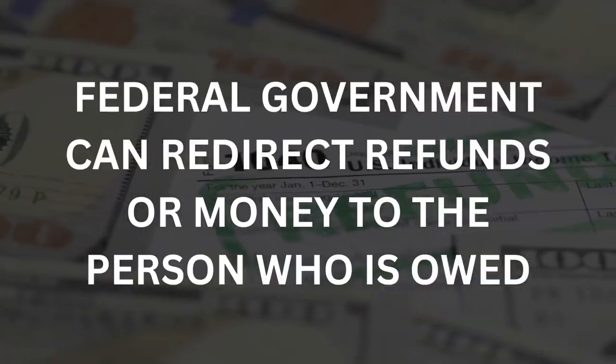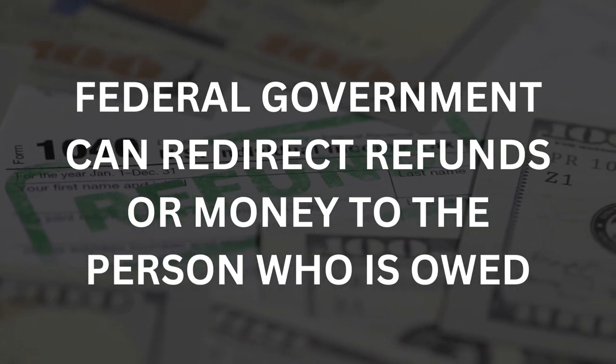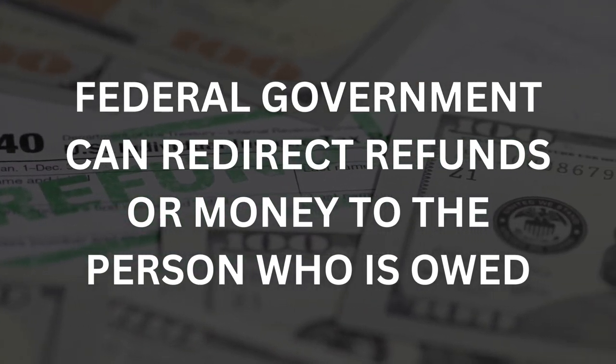Child support and alimony payments are often deducted automatically through an income withholding order via the state disbursement unit. If the person paying child support is found to have not complied or owes significant arrearages, federal tax refunds or other federal money can be redirected to the person who is owed child support.